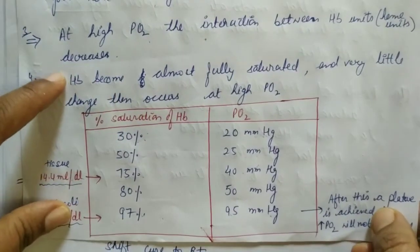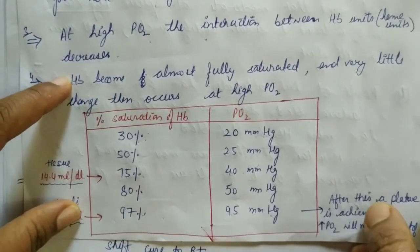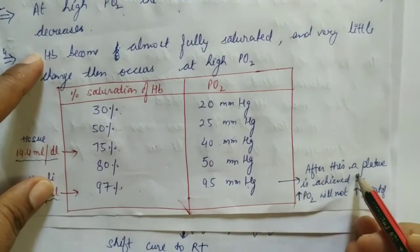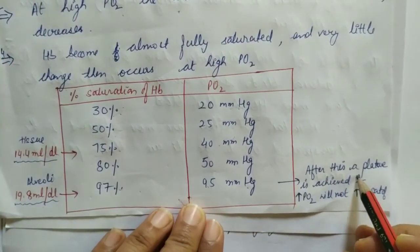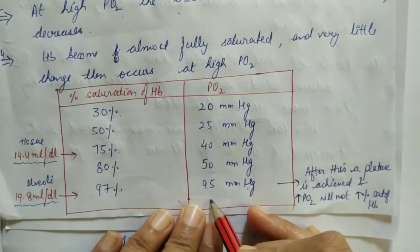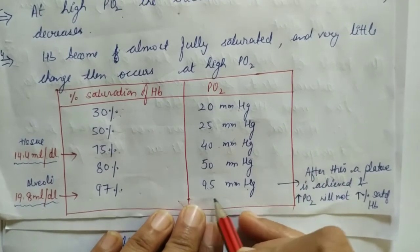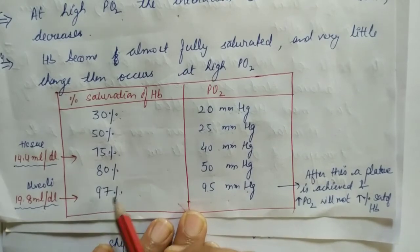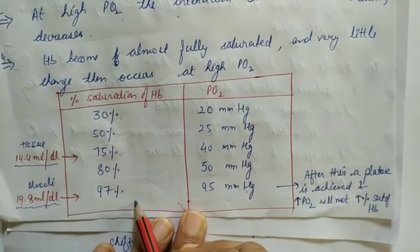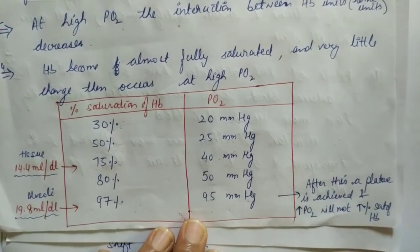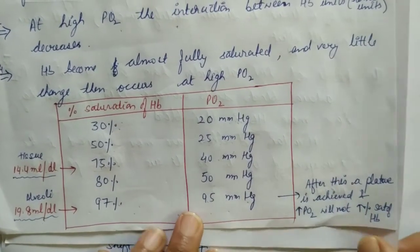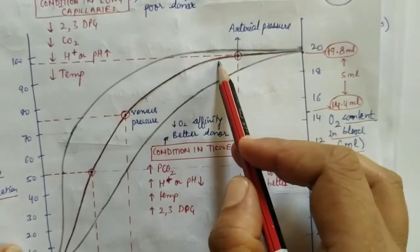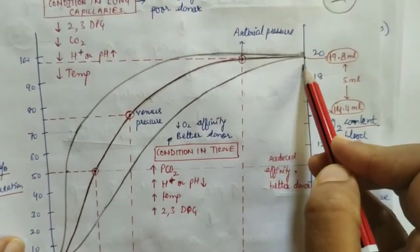If after 95 mmHg you further increase the partial pressure of oxygen — say you make it 100 or 104 — then there is not much difference in saturation. Going forward, our graph achieves a flat curve, meaning it flattens out. This happens because when you increase the oxygen partial pressure further, it makes no significant difference.